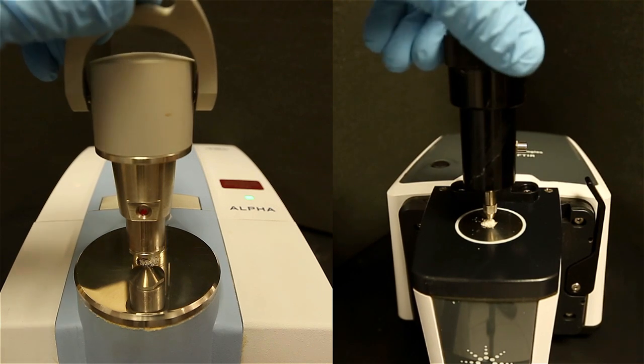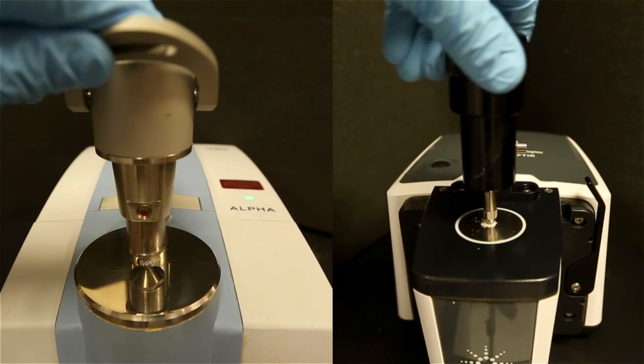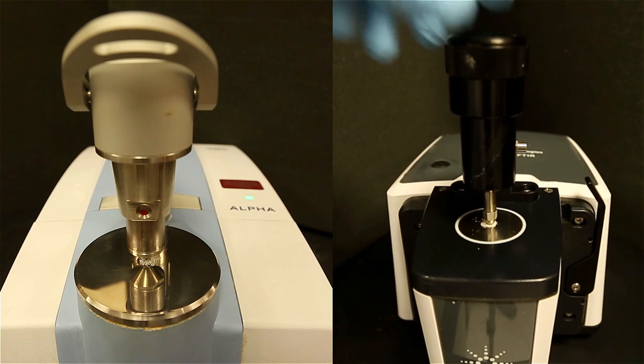For the Agilent instrument, a knob will have to be turned to allow the pressure tower to come down over the sample. Stop turning the knob when you feel resistance.